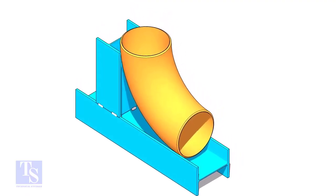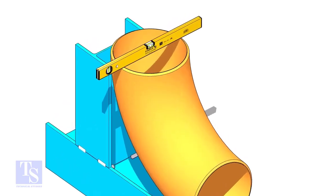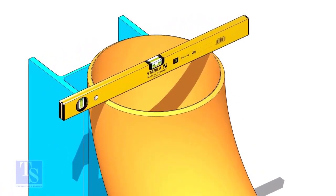Put the elbow in the jig. Level the top face of the elbow on both ways.